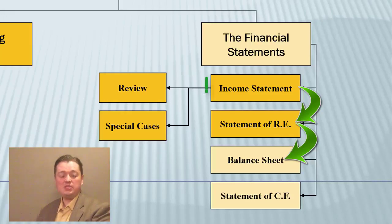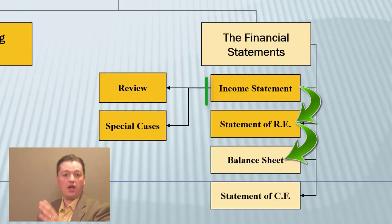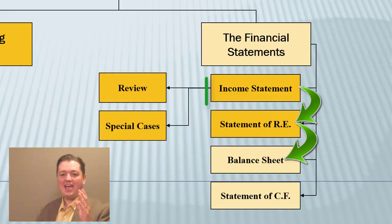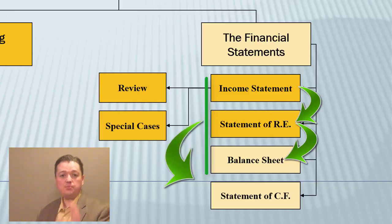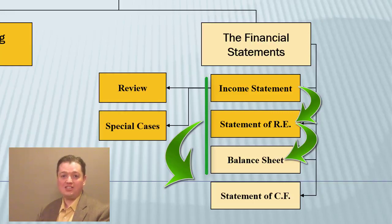Once I have an income statement — which gives me my beginning revenue, cost of goods sold, other expense numbers, and net income — and I have my dividends from the statement of retained earnings, and I have my balance sheet beginning and ending balances, I can use all of that information to create my statement of cash flows. It's a very specific order, so specific and important that it's one of our key concepts. Let's get started.